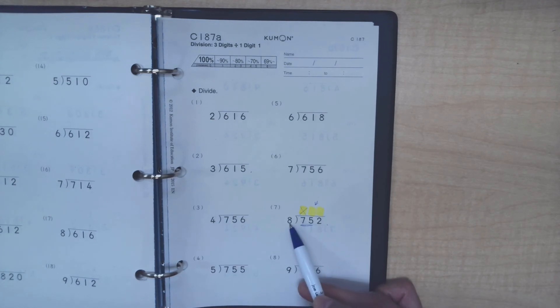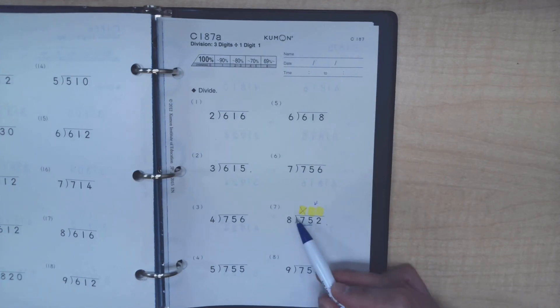How many times can 8 go into 75? This is where you have to use your multiplication skills to figure out 8 times what can either be 75 exactly, or it can go really close to 75 without going over. You have to go up as closely as you can without going over 75.